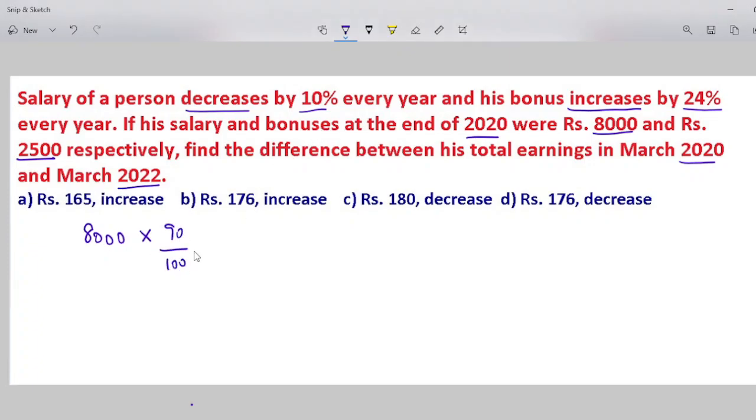For salary, we calculate 90 by 100 into 90 by 100 times 8000. Two ciphers, two ciphers, then one cipher, one cipher, one cipher. Multiply: 8 into 9 equals 72, then 720 into 9.